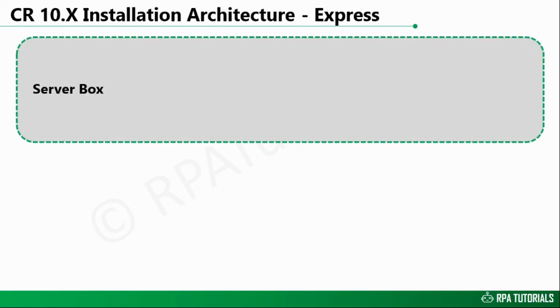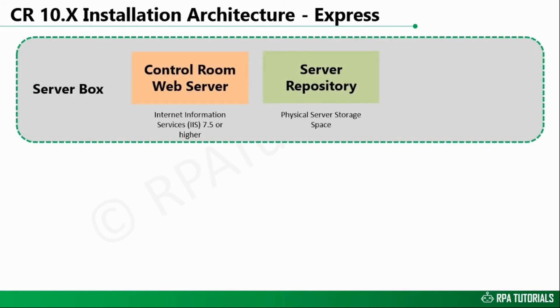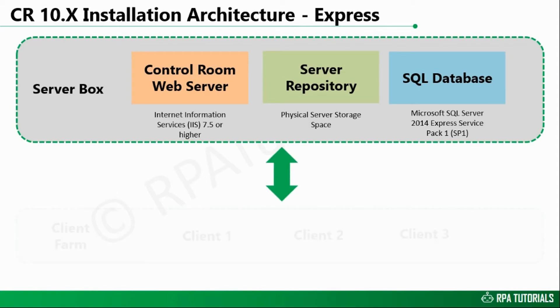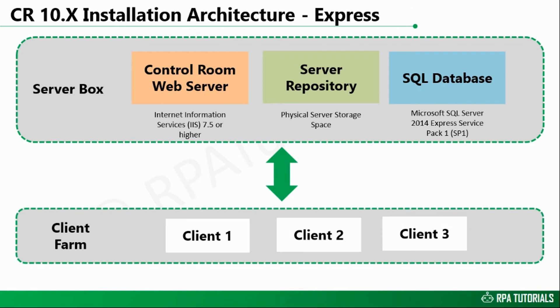In the Express mode, all three building blocks are installed on the same machine or server with default settings. The server box then links to client machines, which can be hosted on the same domain or a different domain as the server box, but should have two-way connection enabled at required ports. The application tier requires Internet Information Services 7.5 or higher, and the data tier requires 100 GB of storage and Microsoft SQL Server 2014 Express Service Pack 1 to be installed as part of this mode of installation.